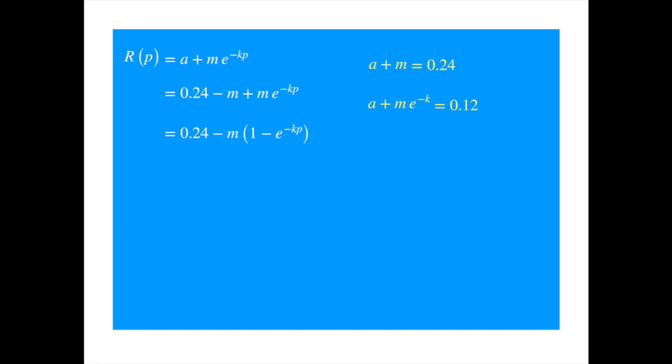Let's substitute for alpha from the first equation. Next, we factor out m and shift the 0.24 to the right-hand side. And now, we can isolate m on the left-hand side. And then substituting this m into the R expression we get.